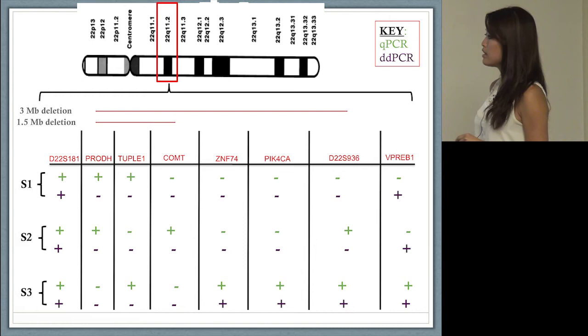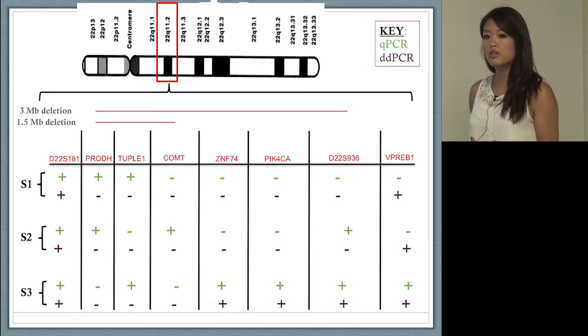For sample three, it looks like this individual has a 1.5 megabase deleted region, but it's hard to say where the endpoints are. You can tell that the DDPCR results are pretty straight across the board, and I'll show you the numbers later. They look way more reliable and robust.